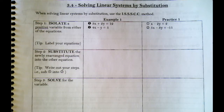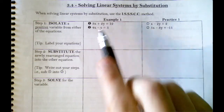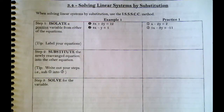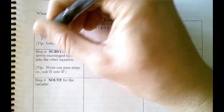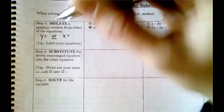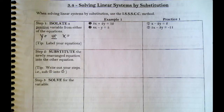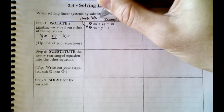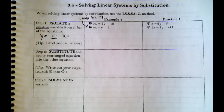Our first step is to isolate. In example one we have two lines: 3x plus 2y equals 12, and 4x minus y equals 5. When we're looking to isolate, we want one of our equations — not both, just one — to say either y equals or x equals. The easiest way is to pick an equation that has x or y almost by itself already. We're going to choose equation 2 because it has a minus y term, so y is almost already by itself.